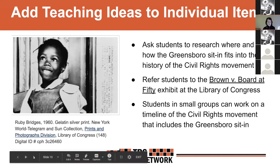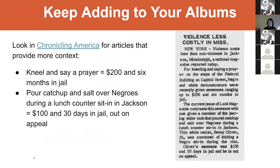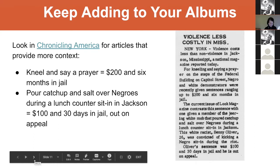Another way to add context is to find newspaper articles — I love Chronicling America from the Library of Congress. I pulled out phrases from an article from Mississippi showing that if African-Americans knelt and said a prayer, they would be fined $200 and given six months in jail. But if white people poured ketchup and salt over Negroes during a lunch counter sit-in in Jackson, they got $100 fines and 30 days in jail and were out on appeal. This is important contextual information for this kind of album.